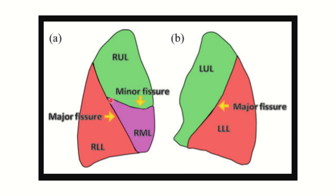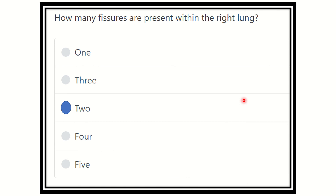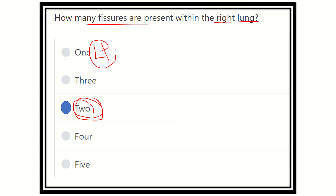Here we can see the oblique fissure, and this horizontally placed fissure is the horizontal fissure. In the case of the left lung, it has only the oblique fissure. So the right lung contains two fissures, and the left lung has only one fissure. Therefore, the answer to this question is two fissures. Thank you all.